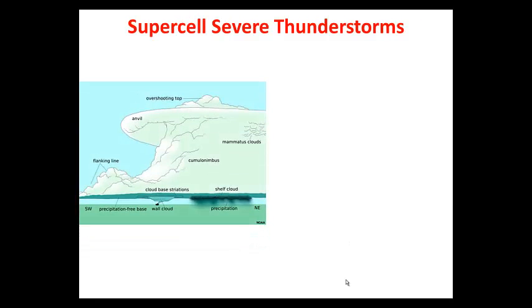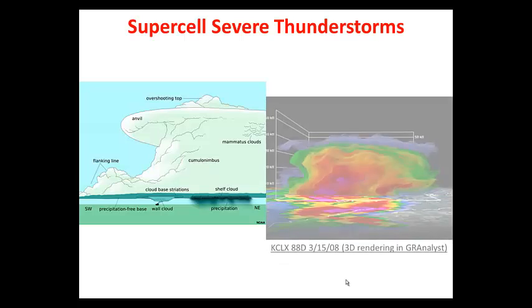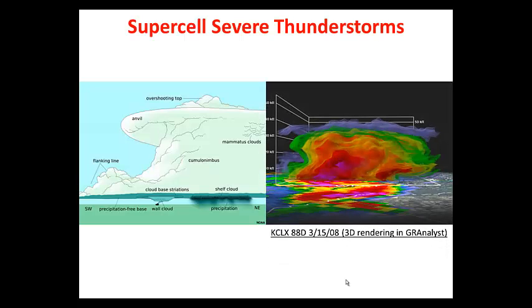A supercell severe thunderstorm, on the other hand, is a highly organized thunderstorm, much different from the garden-variety pulse thunderstorms. They have the capability of producing tornadoes, some of them strong, damaging hail as large as softballs, and strong downdrafts which can exceed 100 miles an hour, causing an awful lot of wind damage. As you can see by the image here on the left, they can have overshooting tops that extend up above 50,000 feet in the worst cases, and they have a lot of other structural clouds within the supercell. One of those particular structure clouds is the mammatus clouds, which we'll be learning about next.